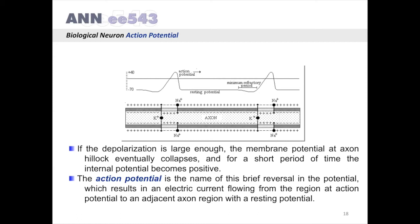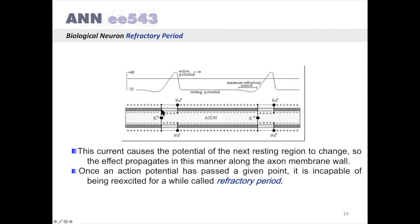This results in an electric current flowing from the region of action potential to an adjacent axon region with a resting potential. This current causes the potential of the next resting region to change, so the effect propagates in this manner along the axon membrane.